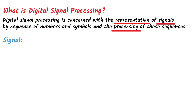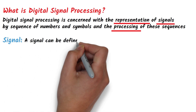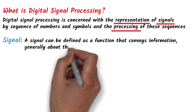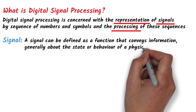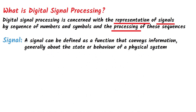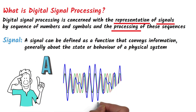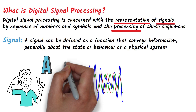What is a signal? A signal can be defined as a function that conveys information, generally about the state or behavior of a physical system. For example, while I am speaking, I am generating audio signals using my vocal cords. For instance, when I say the alphabet A, I am generating an audio signal that conveys the information of alphabet A.